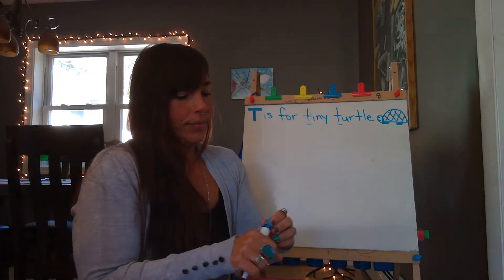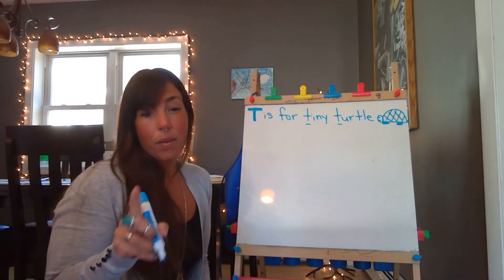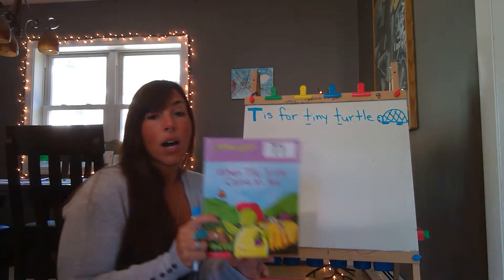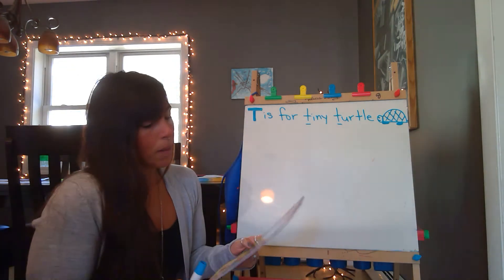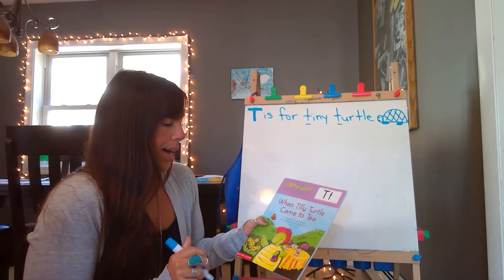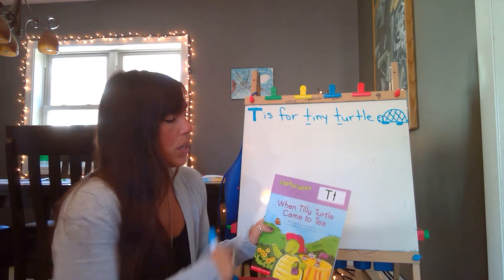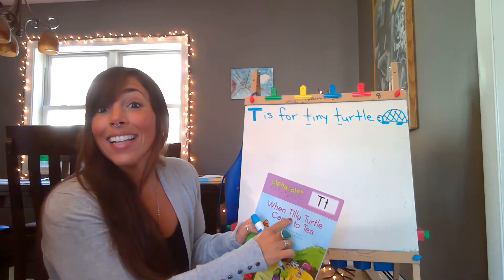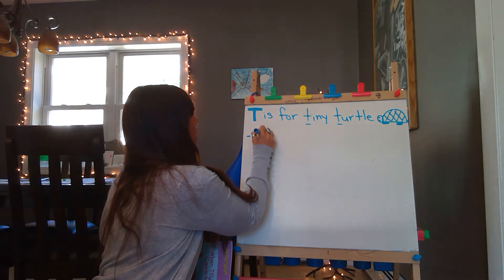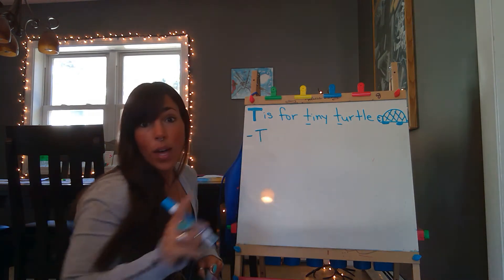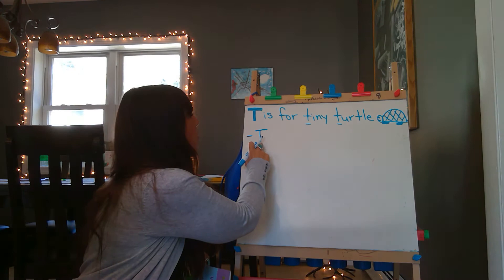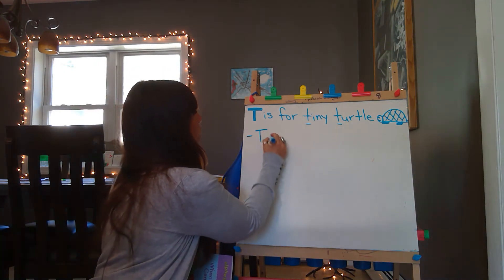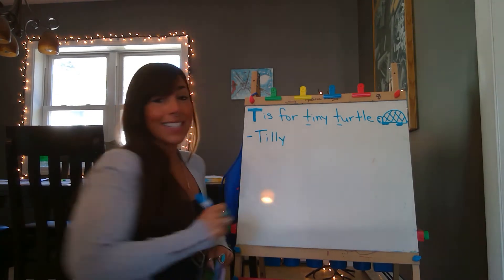I'm going to first think about what we read in our AlphaTales story, because that helps me think about some of those words. We already got a turtle — what was the turtle's name? Does anyone remember? Tilly! So I'm going to write Tilly. I'm always going to write someone's name with an uppercase T — straight line down with a line across. T-I-L-L-Y. Tilly!